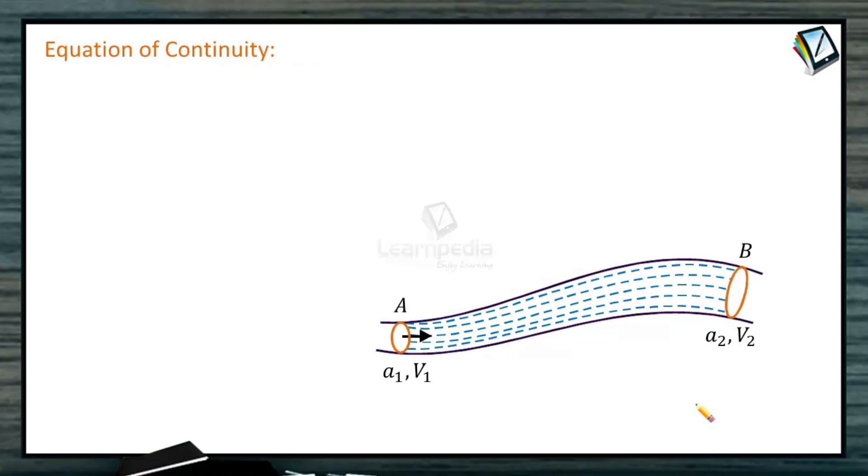Let us study the equation of continuity. The equation of continuity expresses the law of conservation of mass in fluid dynamics. In general, the mass of liquid entering here—suppose the area of cross-section of this part is A1 and velocity of the liquid is V1. Now, these are streamlines which I have shown. At point B, the area becomes larger. Area is A2. Let us consider the speed as V2.